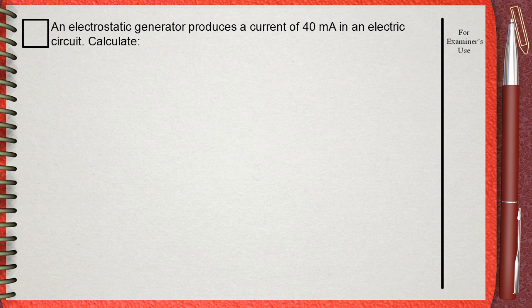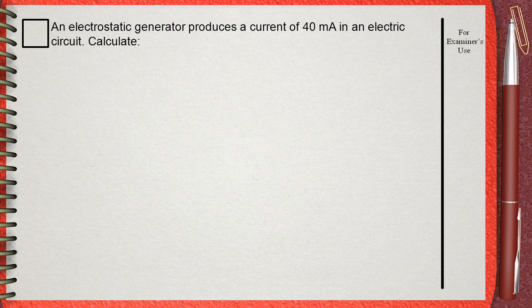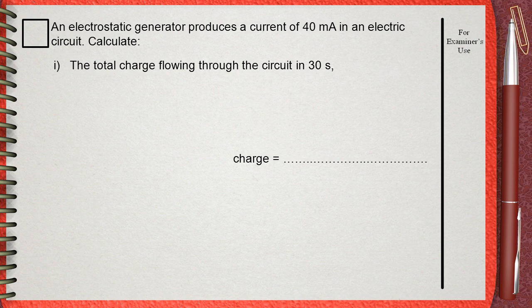An electrostatic generator produces a current of 40 mA in an electric circuit. Calculate: i) The total charge flowing through the circuit in 30 seconds.